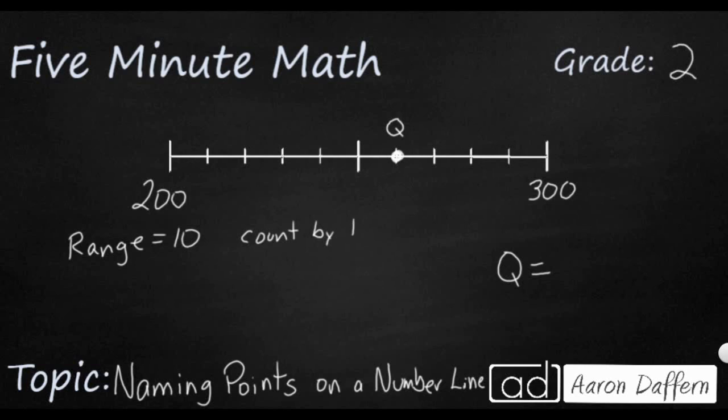So when the distance was 10 apart, we counted by ones. But 200 and 300, that distance or that range is not 10 apart; that's actually 100 apart. So if we were to count by ones, it wouldn't really work because by the time we get up to this Q, we wouldn't be anywhere near 300.